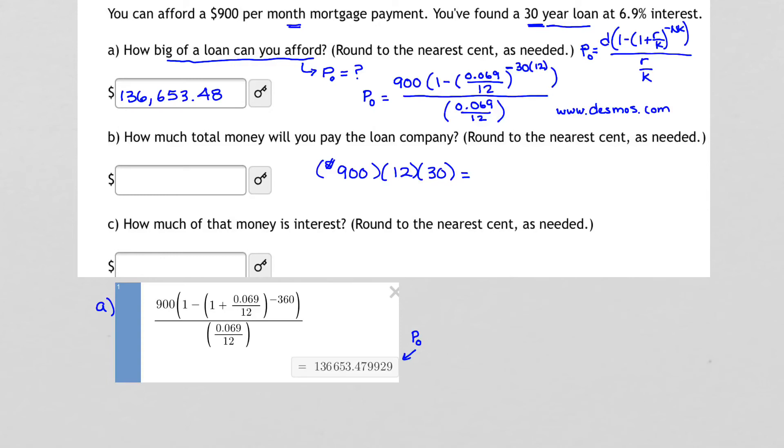Pull out a scientific calculator or use Desmos and calculate this out. You should get $324,000. That's what goes in the box for Part B. $324,000.